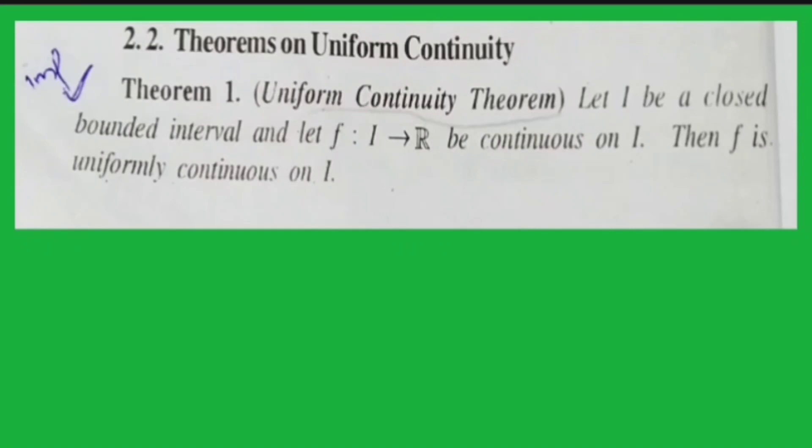F1 is a closed bounded interval function, and f1 is a continuous function. If f1 is continuous on I, and I is a closed bounded interval, then f1 is continuous. We will prove it — if f1 is uniformly continuous on I, we can prove that.